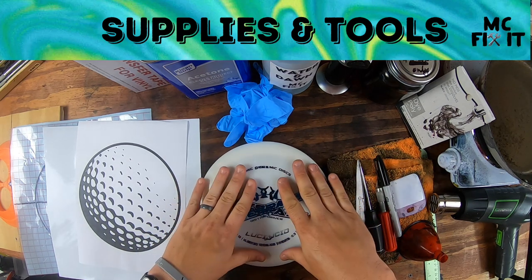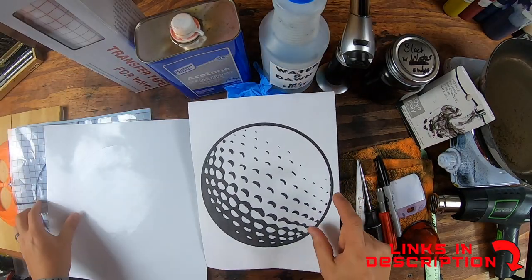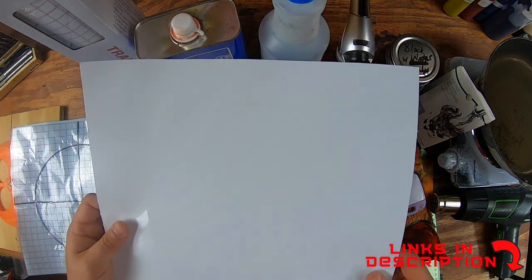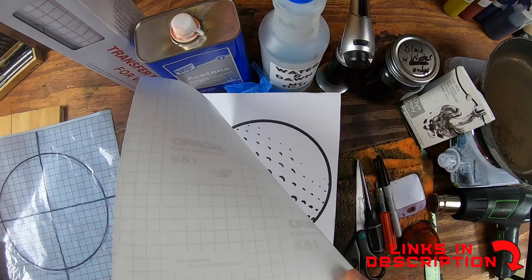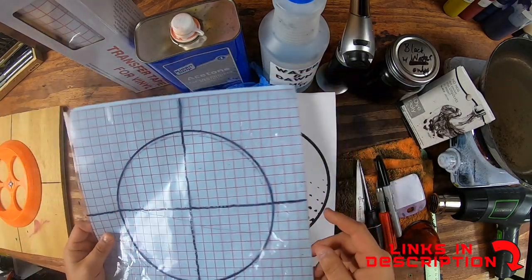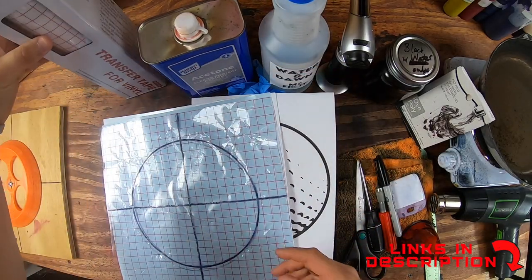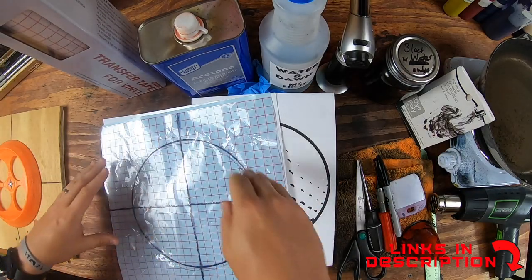You're going to want some kind of disc. I would prefer a white one if you're going to do a design like this. Then go ahead and cut it out on a Cricut. This is an Oracle 6150.